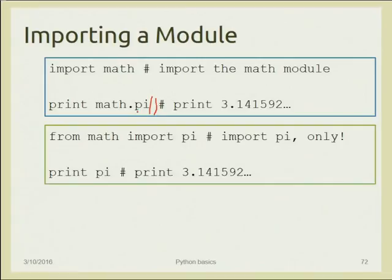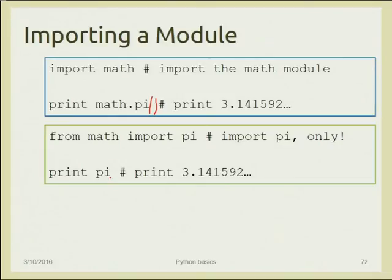Another way is 'from math import pi' — this imports only the pi variable from the module. Then you can simply write 'print pi'. However, if you later redefine pi locally as '1', then the print will output '1' not the math module's pi, because the local variable overwrites the imported one.